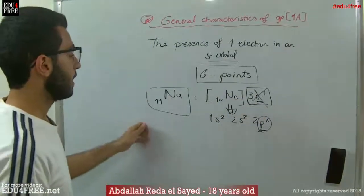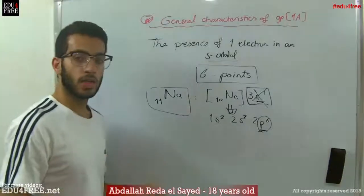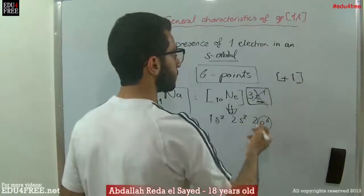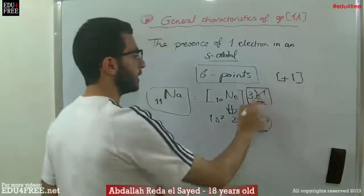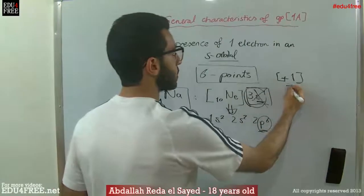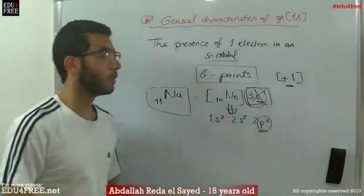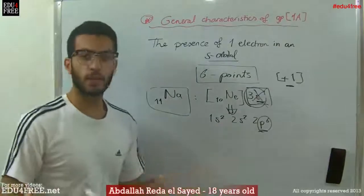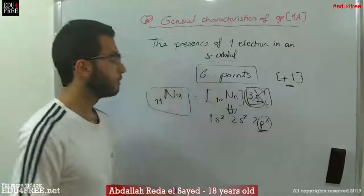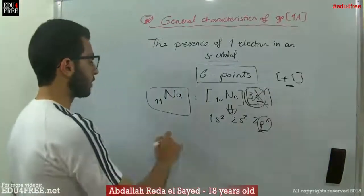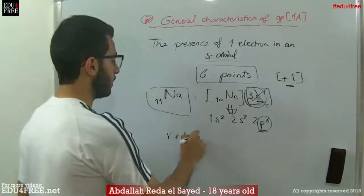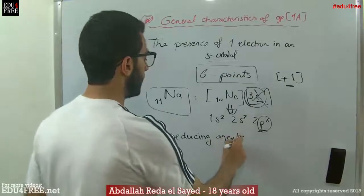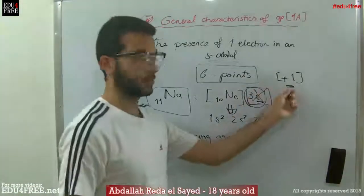The oxidation number of these elements is +1, since they give up one electron. Accordingly, as they are easily oxidized, they are very strong reducing agents — they reduce other elements by giving them electrons.